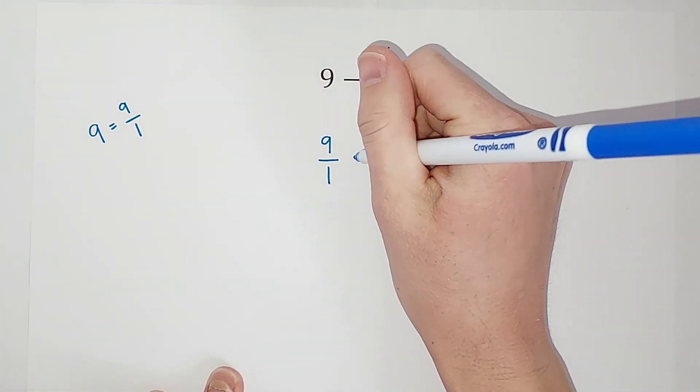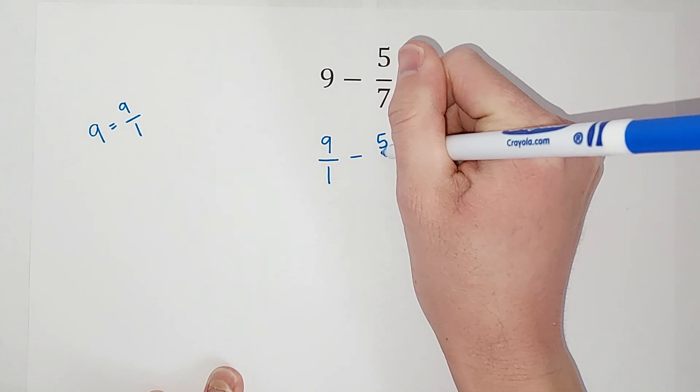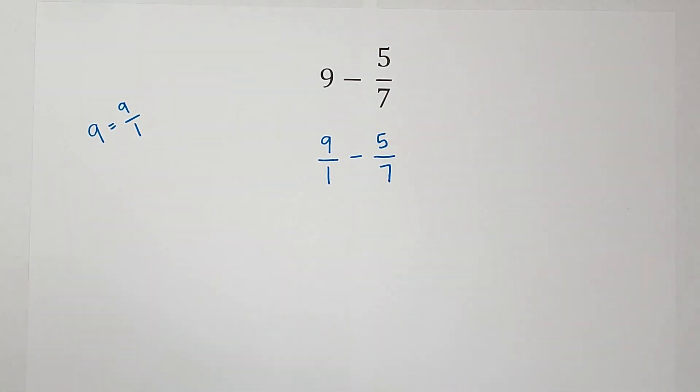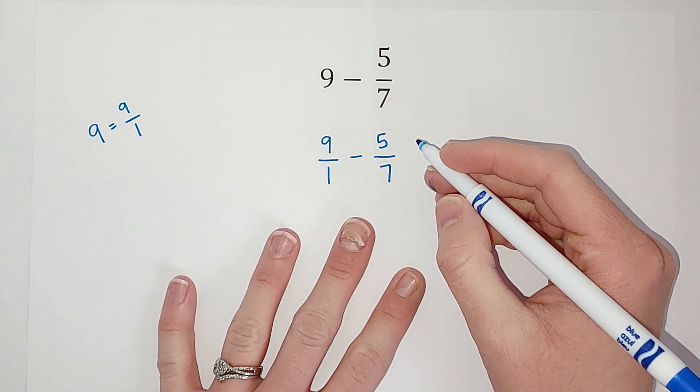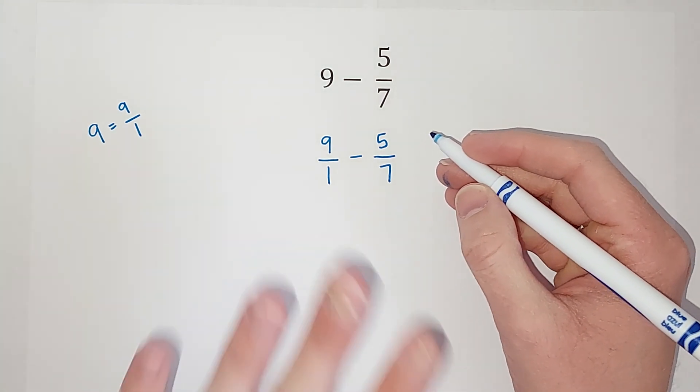So now I've got 9 over 1 minus 5 over 7. Some of you are probably like, sweet, I'm good to go now, I know how to do it. And some of you are probably like, internet lady, that did nothing for me. It made it worse, actually. Okay, stick with me.